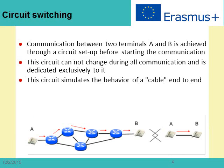Backbone network technologies can be either circuit switching or packet switching based. In circuit switching, communication between two terminals A and B is achieved through a circuit set up before starting the communication. The circuit cannot change during the communication and is dedicated exclusively to this communication, meaning that if it is not being used, its allocated capacity and resources are wasted. The circuit simulates the behavior of a cable.